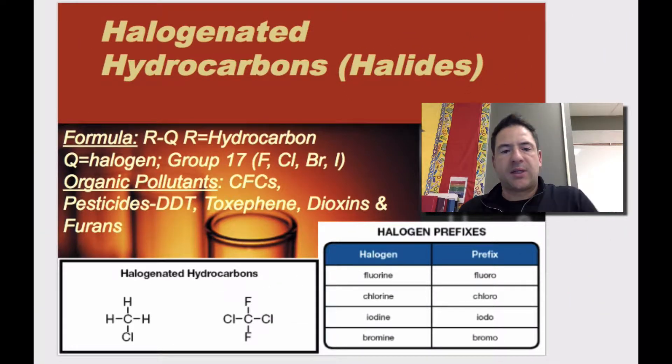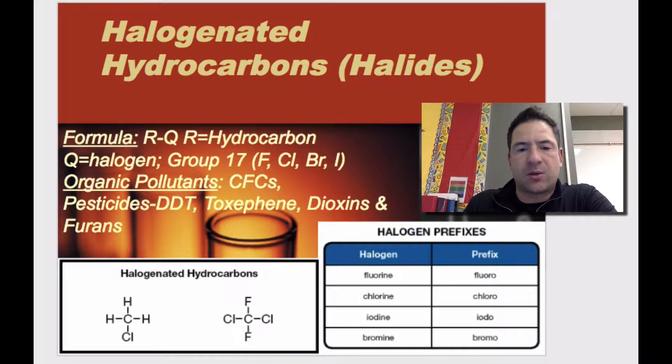Hey folks, so today what we're going to talk about are naming and drawing halogenated hydrocarbons, or also known as halides. If you take a look down at the bottom of the screen here, you'll notice that I can put a square around chlorine. You can also put it around fluorine. And so these are going to be our halogens.